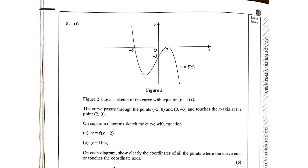Question number 5. You are given this cubic curve. Figure 2 shows a sketch of the curve with the equation f of x. The curve passes through and touches the x-axis at the point. On separate diagrams, sketch the curve with the equation: part A, f of x plus 2; part B, f of minus x. On each diagram, show clearly the coordinates of all the points where the curve cuts or touches the coordinate axis. This question has six marks.